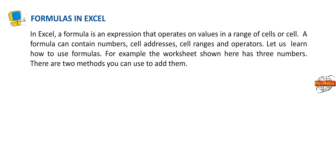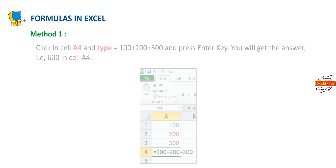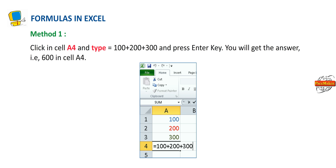For example, the worksheet shown here has three numbers. There are two methods you can use to add them. Method 1: Click in cell A4 and type =100+200+300 and press the Enter key. You will get the answer, that is 600, in cell A4.